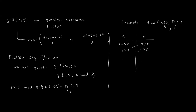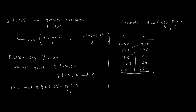We continue: 276 goes to the x position, and we compute 759 mod 276, which gives remainder 207. Then 207 becomes x, and 276 mod 207 gives 69. Then 69 becomes x, and 207 mod 69 gives remainder 0. Once we reach remainder 0, the current x value is the greatest common divisor d.